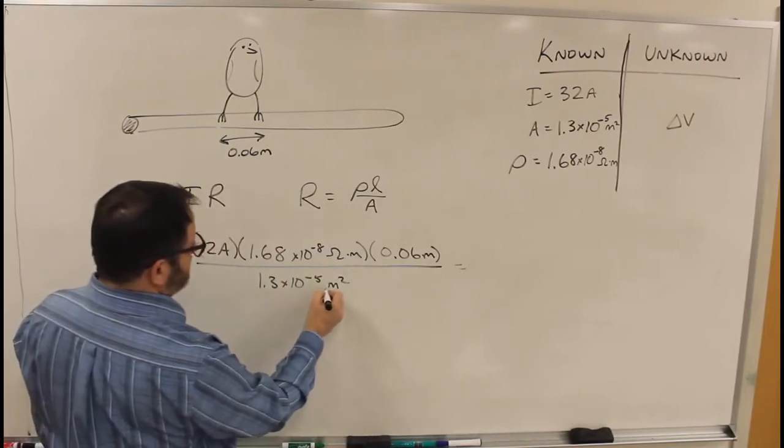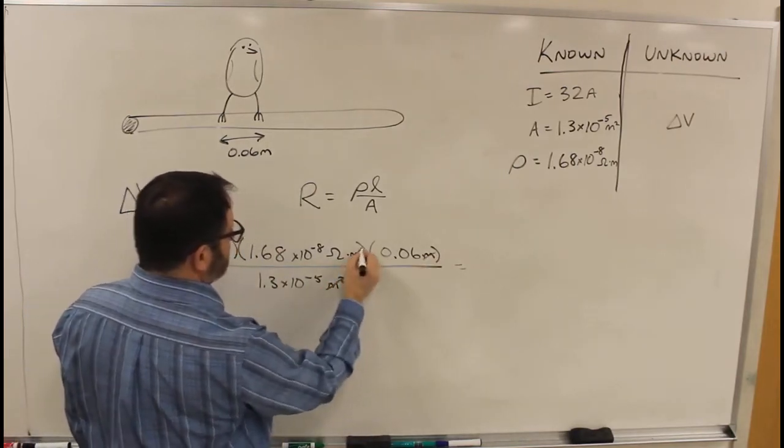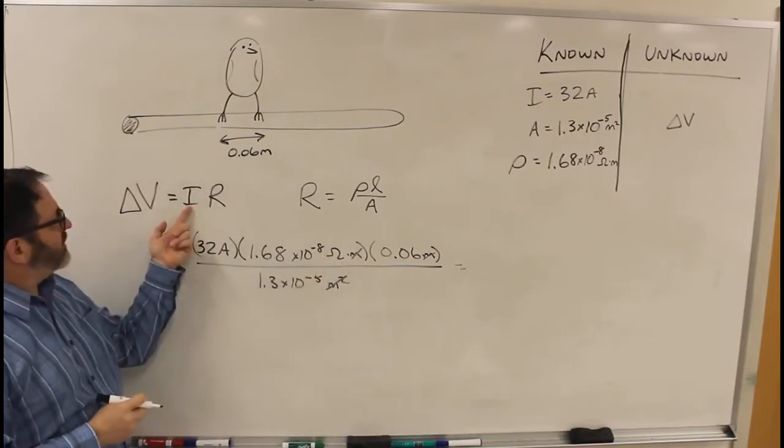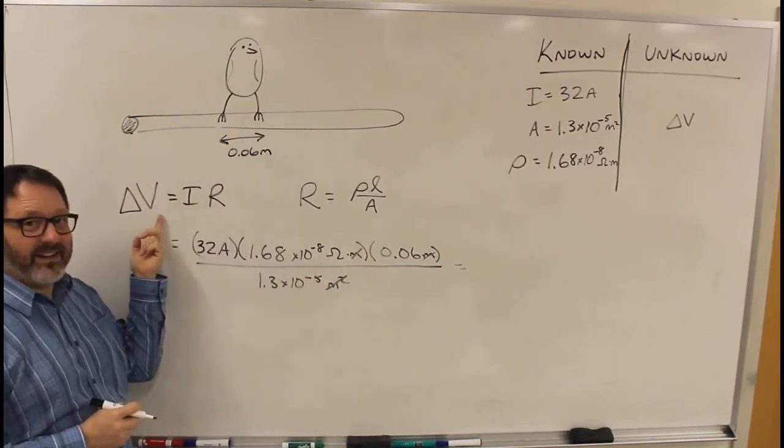So units, meters squared, cancel those. Now I have amps times ohms. Amps are here, ohms are here. It's going to give us voltage.